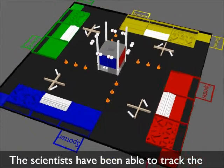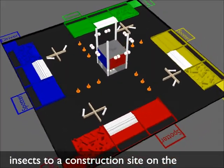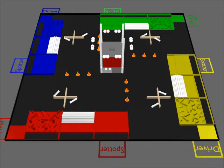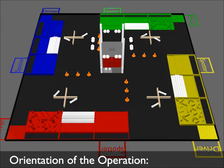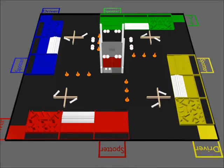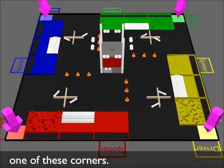The scientists have been able to track the insects to a construction site on the Best Research Campus. Orientation of the operation: Four robots will be working simultaneously. Each robot will be starting from one of these corners.